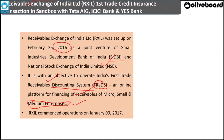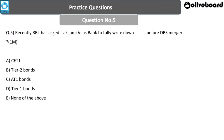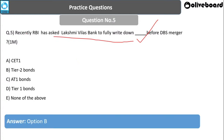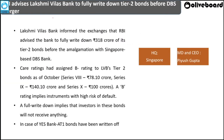Next question: RBI asked LVB to fully write down which bonds before its DBS merger? Options: Common Equity Tier 1 bonds, Tier 2 bonds, Additional Tier 1 bonds, Tier 1 bonds, or None of the above. The answer is Tier 2 bonds. LVB's Tier 2 bonds have been asked by RBI to be completely written down.